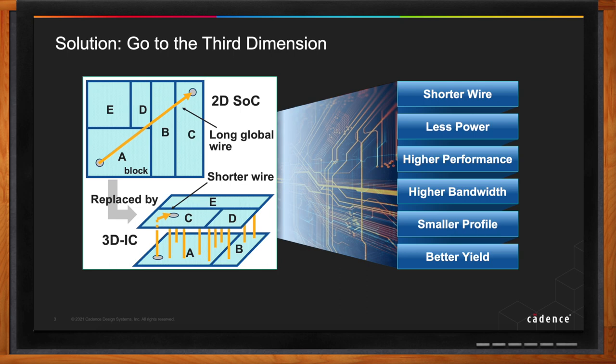Because of the shorter wire, you'll also have less power. You can push the performance a little bit more because you'll have better timing. If you put memories on top and have shorter access to those memories from the compute elements, you can have higher memory bandwidth. Overall, the two ICs that you stack on top of each other will have a smaller area and, indirectly, better yield as well.